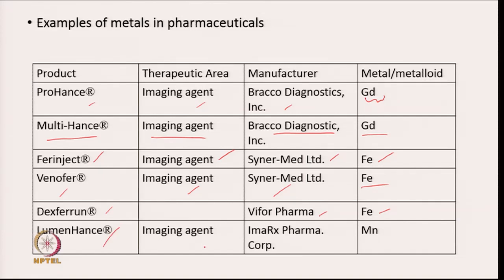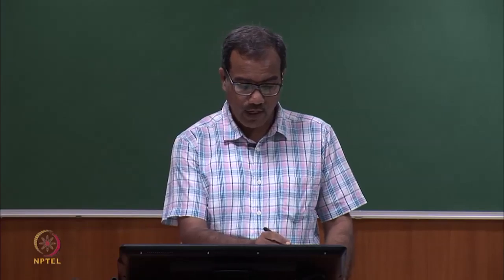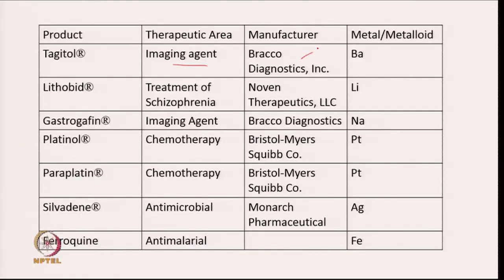LumenHance is an imaging agent from EMA Rx Pharma Corporation where manganese analysis is done. Teslascan R is an imaging agent from Bracco Diagnostics where barium analysis is done. Lithobid, used for schizophrenia, is from Noven Therapeutics LLC and has lithium analyzed. Gastrografin R is an imaging agent from Bracco Diagnostics where sodium analysis is done. Platinol is used in chemotherapy from Bristol-Myers Squibb and has platinum analyzed.